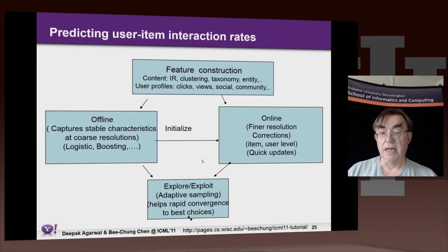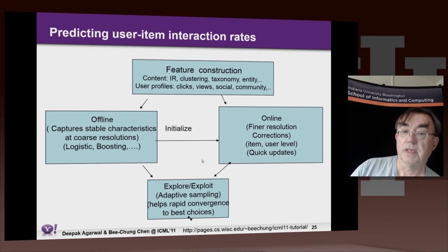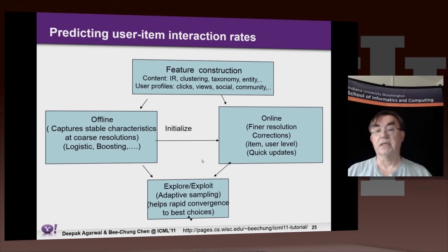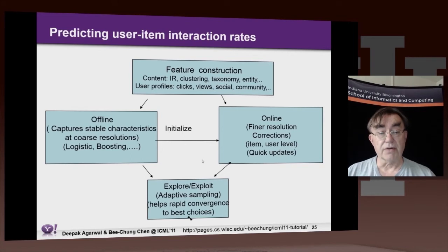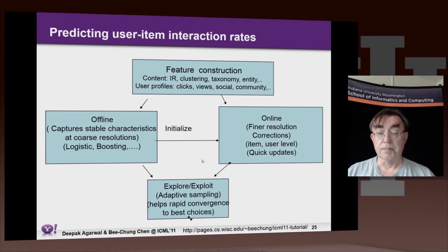This describes the interaction between the various components. We have all these features of our recommender engines: information retrieval, clustering, taxonomies — those are categorizations — profiles, clicks, what people are doing, social networking, these communities. Then we have offline analysis. Some algorithms take a long time, but you run those algorithms offline to provide a base classification of an organization, which can then be updated dynamically, because updates are usually much quicker than running an offline from-scratch classification.